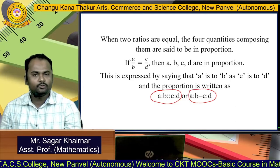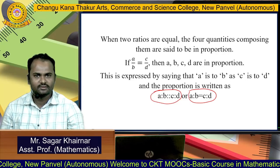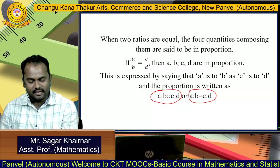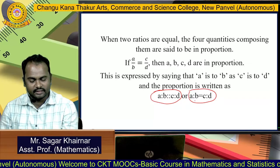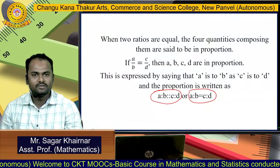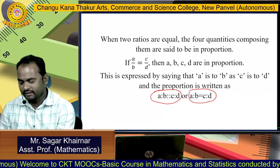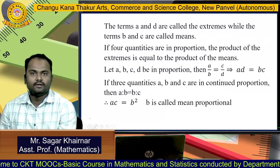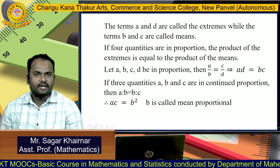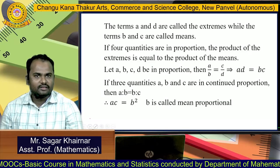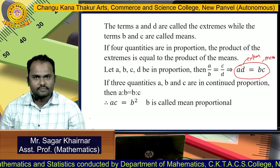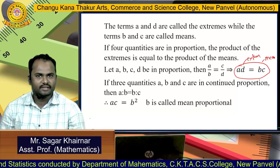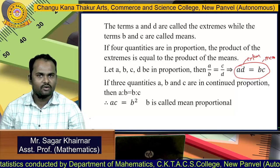There are two types of expressions: A:B::C:D and A:B = C:D. The terms A and D are called the extremes, while the terms B and C are called the means.